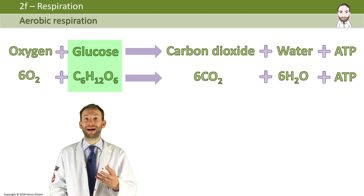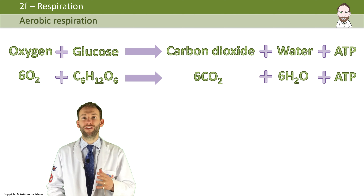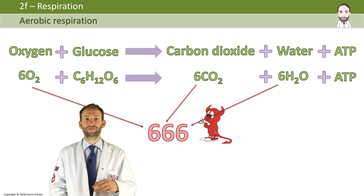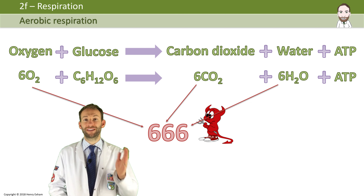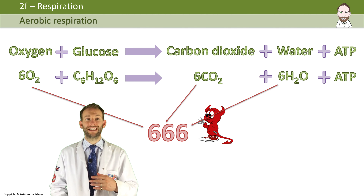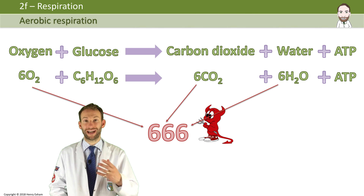You need to balance the equation, and that's where some people get a bit confused. But if you just remember the number of the devil, which is 666, and put that number in front of everything apart from the glucose and the ATP — so you've got 6O2, 6CO2, and 6H2O. That's how you balance the equation.